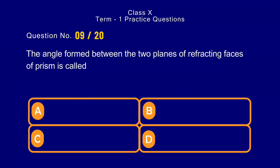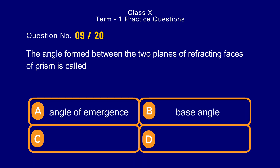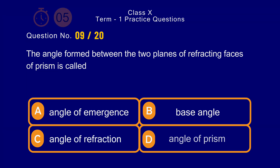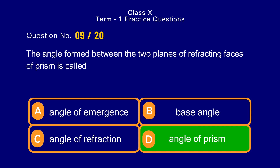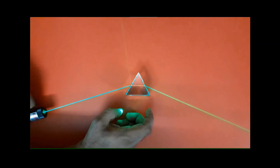Question number 9. The angle formed between the two refracting faces of a prism is called — options: a) angle of emergence, b) base angle, c) angle of refraction, d) angle of prism. The correct answer is option d) angle of prism. The two refracting faces of the prism make an angle known as the angle of prism.